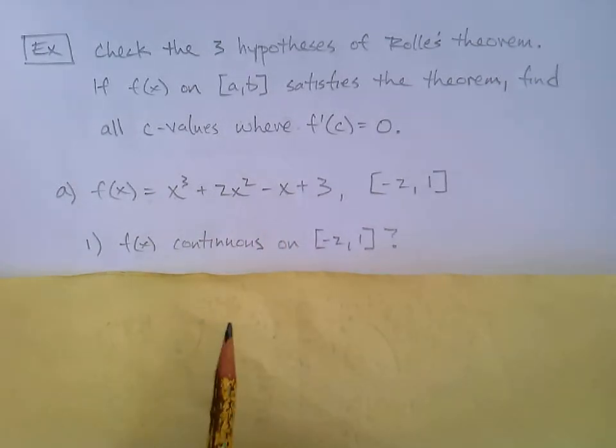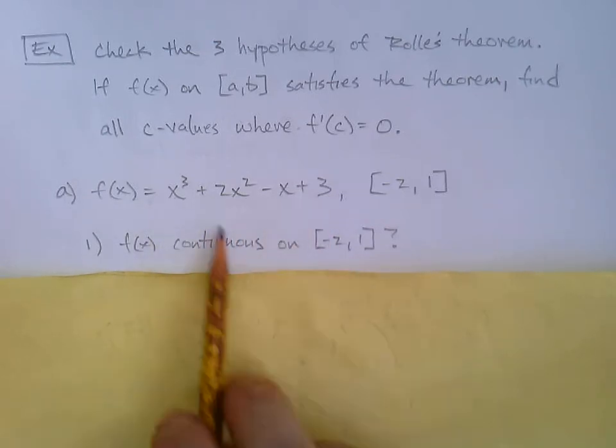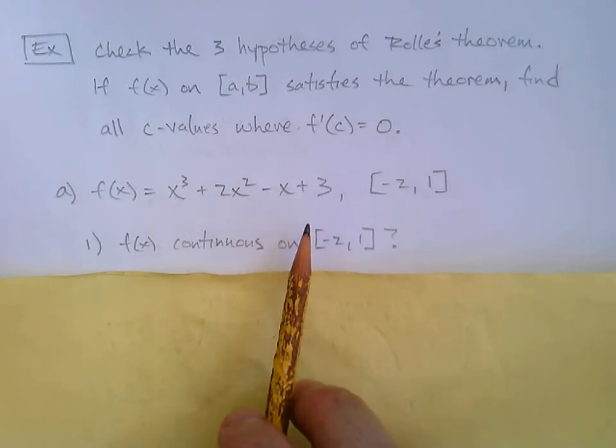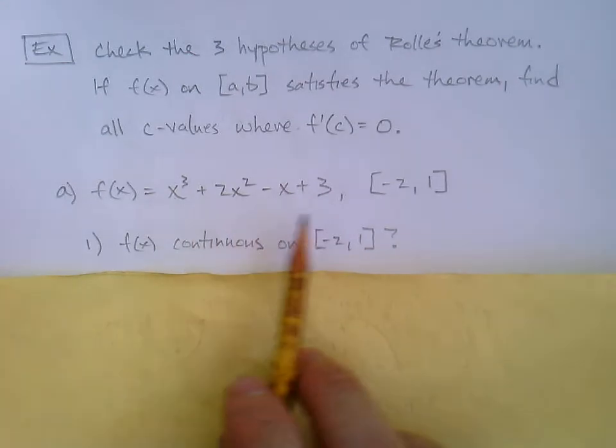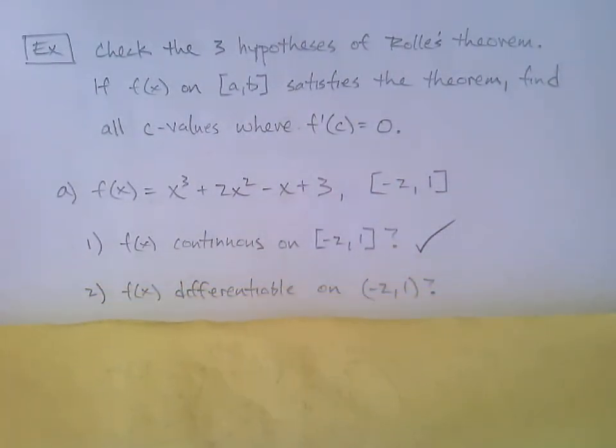And then once we confirm that, if it's true, then we're going to go on and find those c values. Okay. We're going to do a couple of these. Let's look at f(x) equals x³ + 2x² - x + 3. And the interval is from -2 to 1. So we'll begin by checking the hypotheses. First hypothesis is, for that function, is it continuous on -2 to 1? So in this case, we're just going to look at the function x³ + 2x² - x + 3.